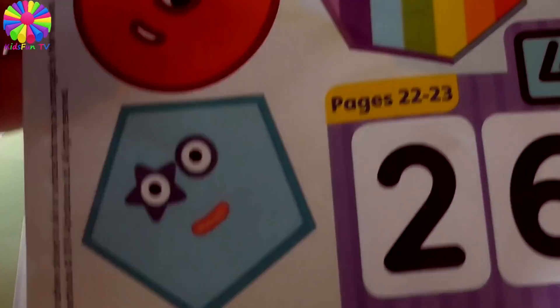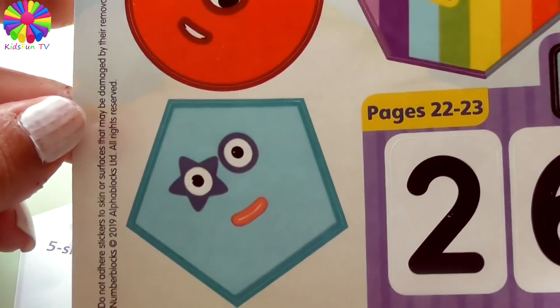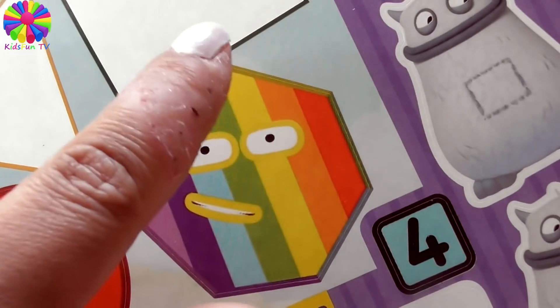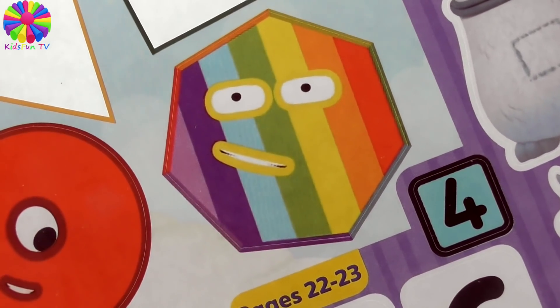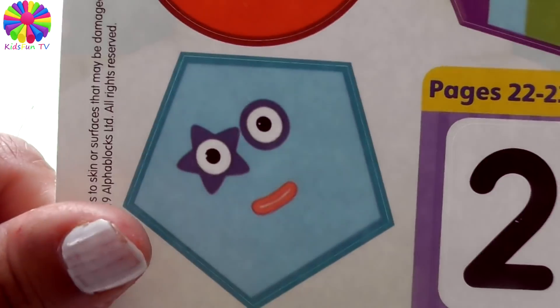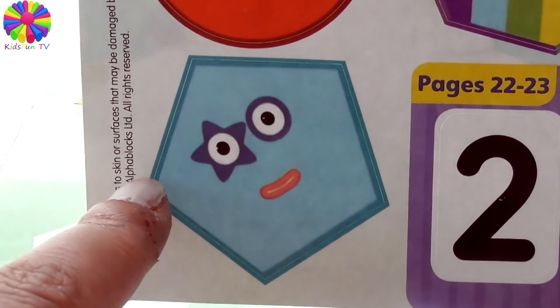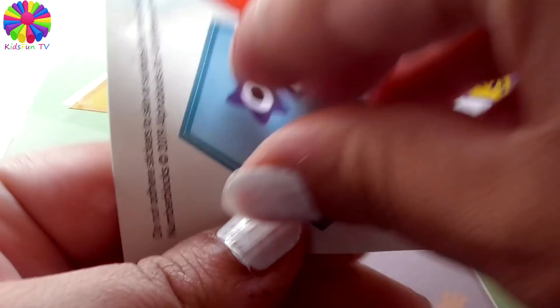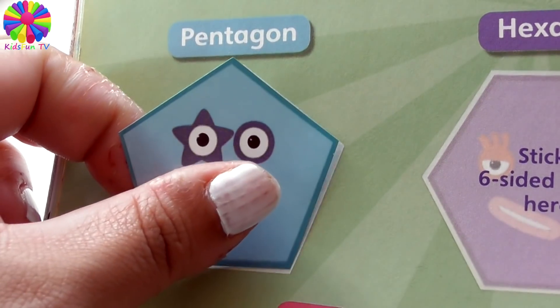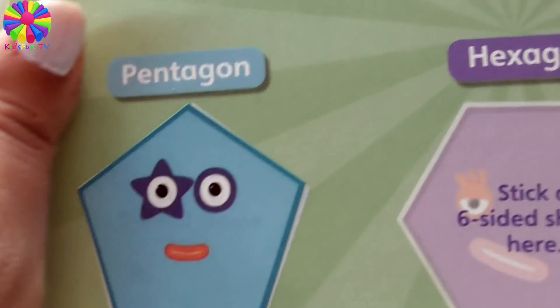The next one is a five-sided shape. Let's see which shape has five sides. Is it this one? No. Is it this one? One, two, three, four, five, six — no. Is it this one? One, two, three, four, five — yes! It's five-sided, and which Numberblock is this? Of course it's Numberblock Five!